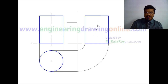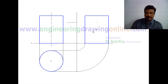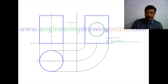Now consider the horizontal cylinder. When the horizontal cylinder is considered, the true shape of the base of the horizontal cylinder is seen in the side view. So you draw the true shape of the base of the horizontal cylinder in the side view somewhere here. This is the true shape of the base of the horizontal cylinder.